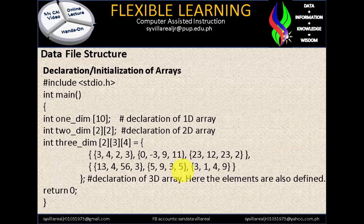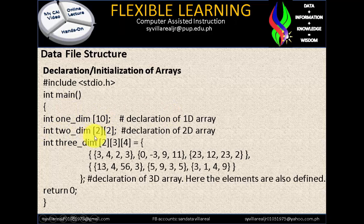Let's move to the declaration and initialization of arrays. We have #include stdio.h, integer main. So int one_dim with content 10 — this is 1D. int two_dim with two square brackets connected together, 2 by 2 — this is 2D. And this one is 3D. Identifying 3D is considered very hard — even 4D and 5D.